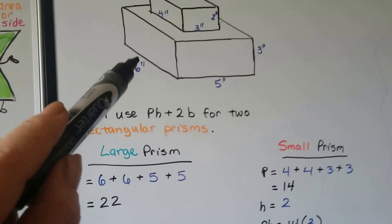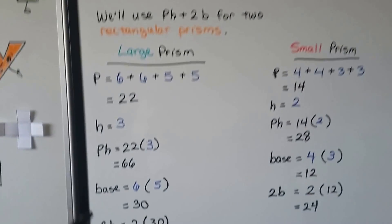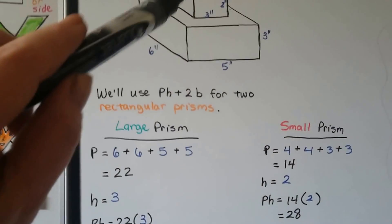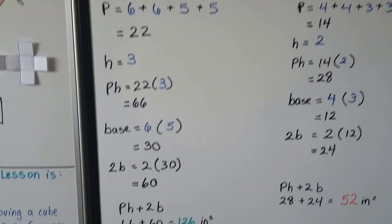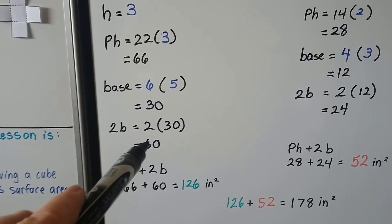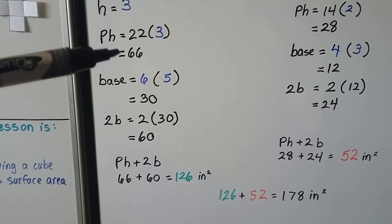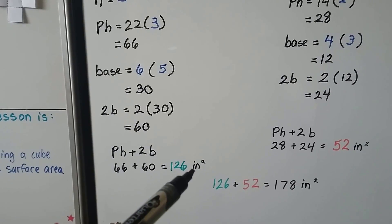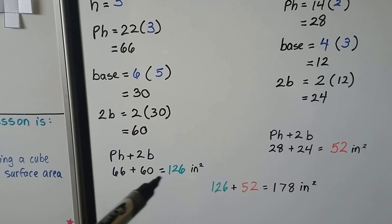Perimeter times height: 22 times 3 is 66. The base is length times width — 6 times 5 is 30. We need two bases for the top and bottom, so 2 times 30 is 60. Adding pH plus 2B: 66 plus 60 gives us 126 inches squared for the large rectangular prism.